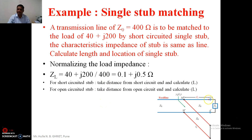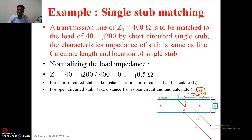Due to reflections, the impedance along the transmission line is always changing. We must search for the point where the real part of the load impedance equals one, that is 1 plus or minus jB. At that point, we connect a stub whose admittance is opposite to the imaginary part of the admittance, cancelling it out. Since the stub is connected in parallel, we deal with admittances rather than impedances.